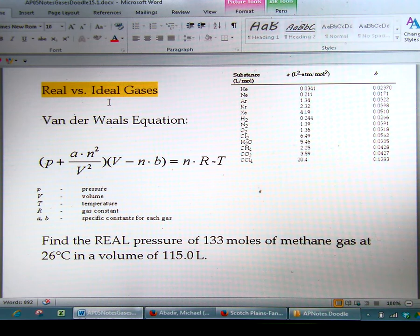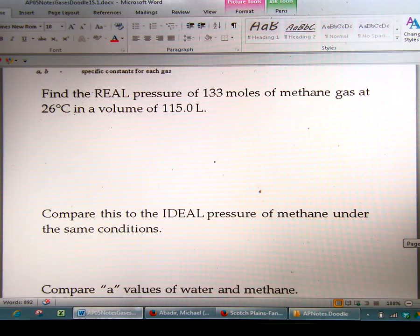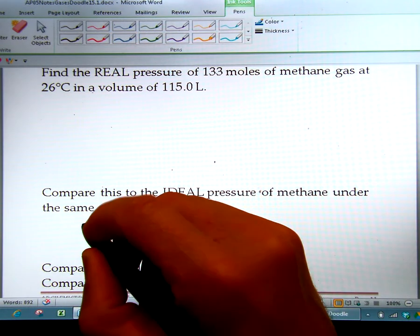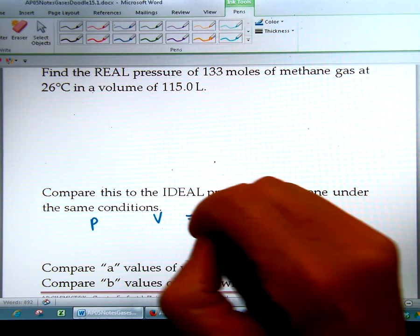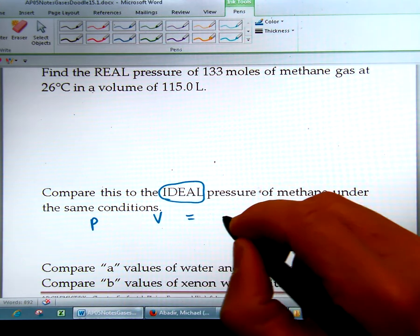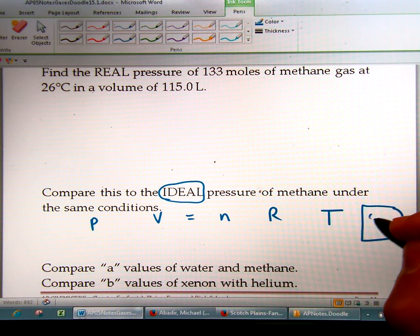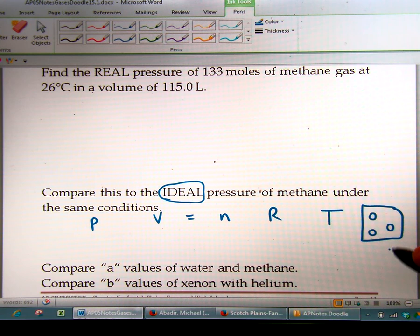So you've heard of the ideal gas law equation, which is PV equals nRT. This is the ideal gas law because it assumes two things about the particles. When you're looking at a container of gases, let's say you have three molecules, you're assuming two things about these molecules. Number one, that they don't take up any space, which is not entirely true. And number two, that there are no attractions between the molecules, which is also not entirely true.